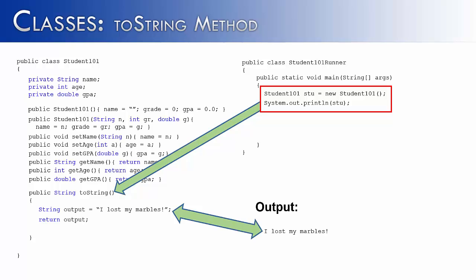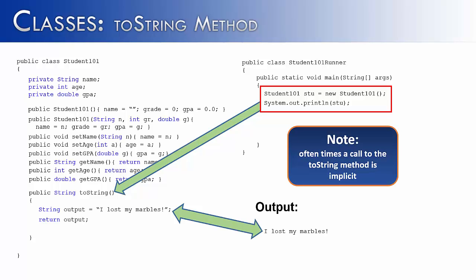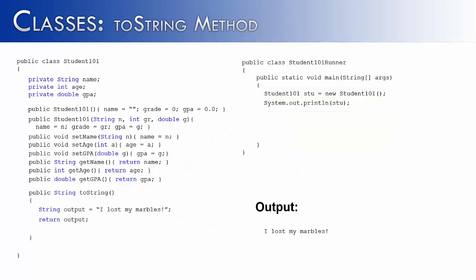Well that's the interesting thing about the toString method. Oftentimes, a call to the toString method is going to be implicit, meaning we're not going to see it. It's going to happen behind the scenes. That print line method is going to find the object's toString method. And how does it know which one to go to? Well we construct it as an object of the Student101 class. And so it knows to go, oh, I'm going to go to the Student101 class, find the toString method, and print out what's inside of it. An important note about the toString method is that oftentimes it is implicit. Now that we know that about the toString method, let's change it up a bit and see what we can do with it and make it a little bit more useful as saying I lost my marbles is probably not the best thing to say for student objects.